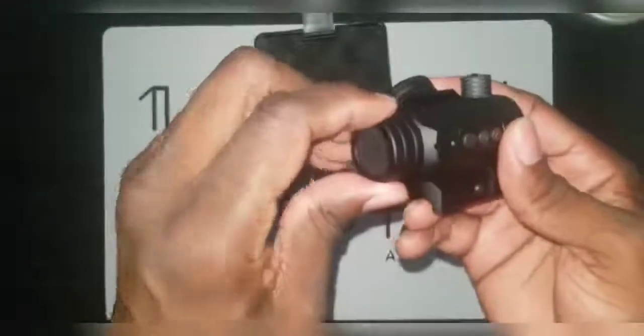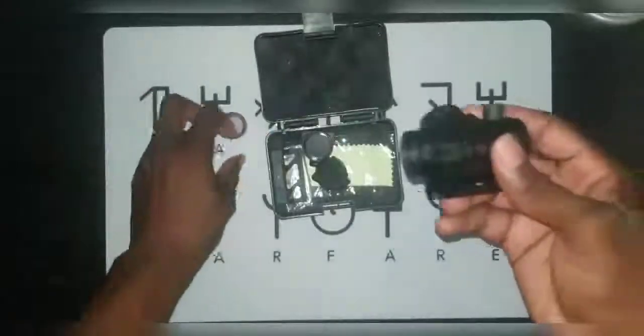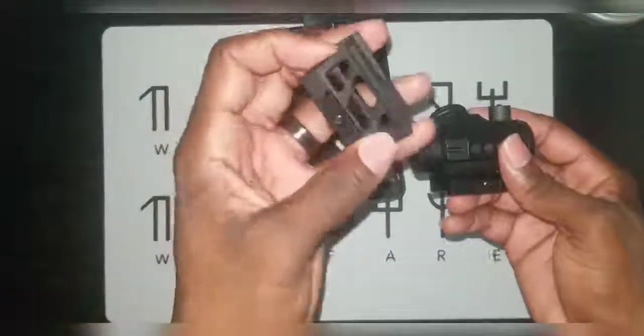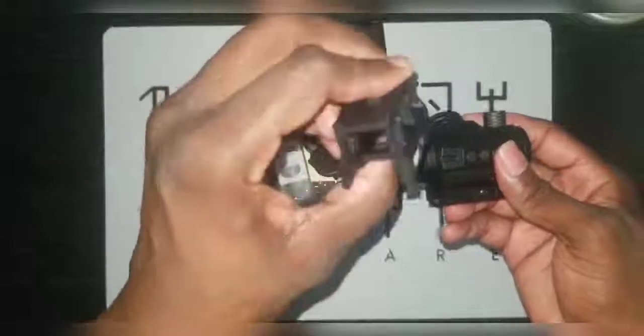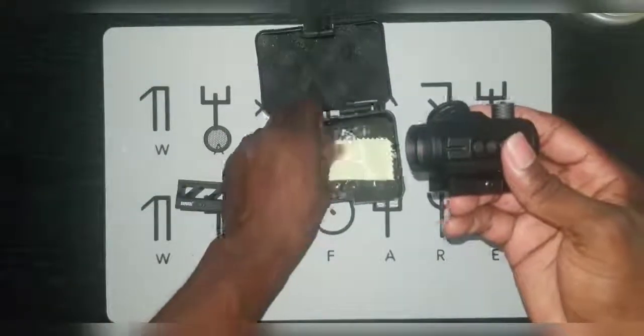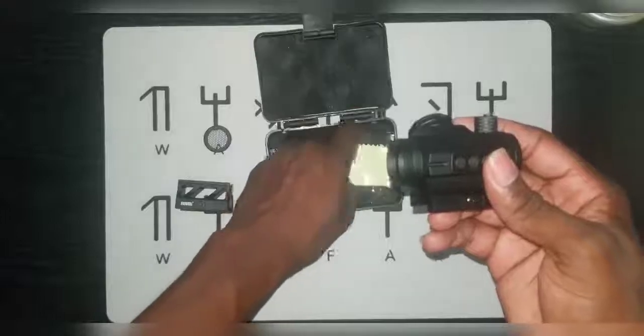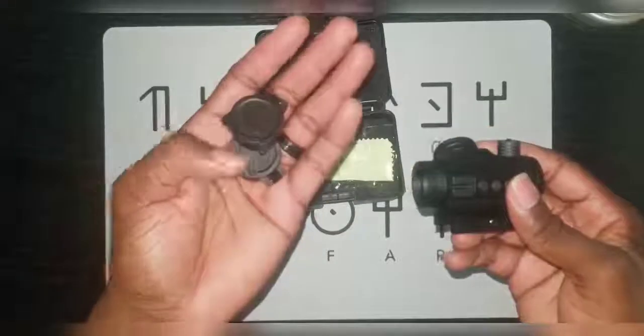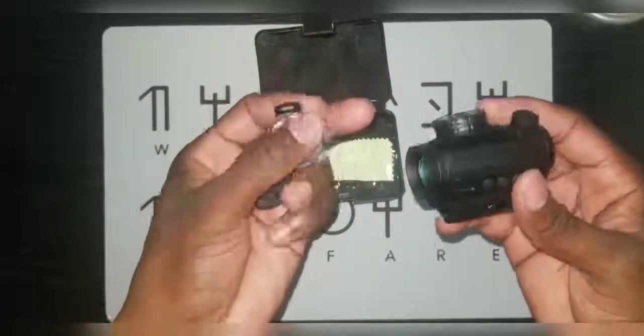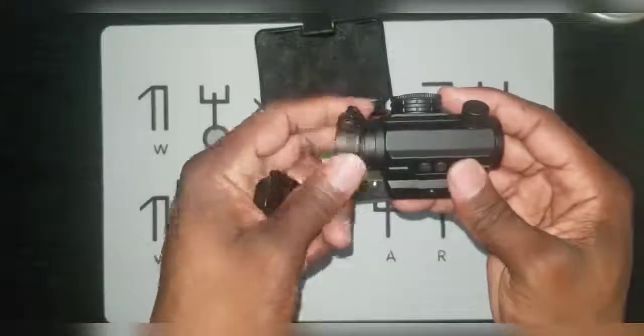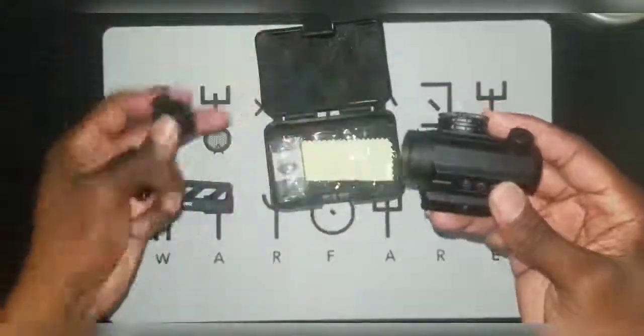It comes with this anti-reflection device that you can screw on, screw off. It comes with an absolute co-witness mount. It also comes with flip-up lens covers that you can just attach. Now flip up.